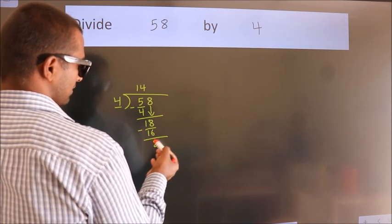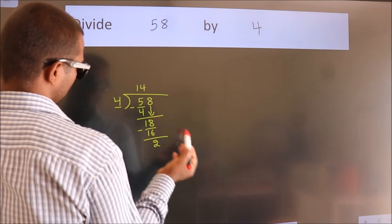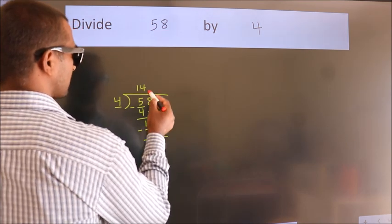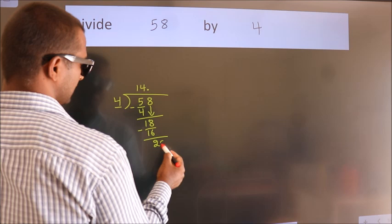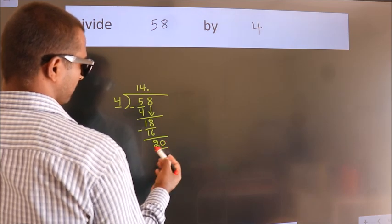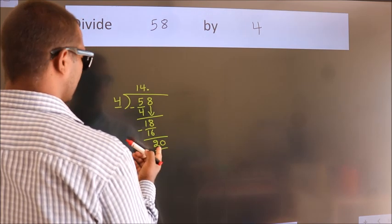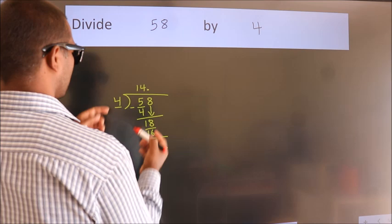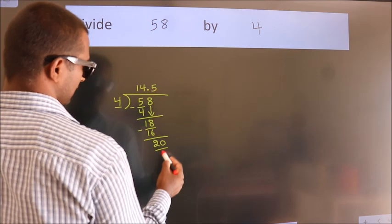After this, no more numbers to bring it down. So what we do is, we put dot, take 0. So 20. When do we get 20 in the 4 table? 4 fives 20.